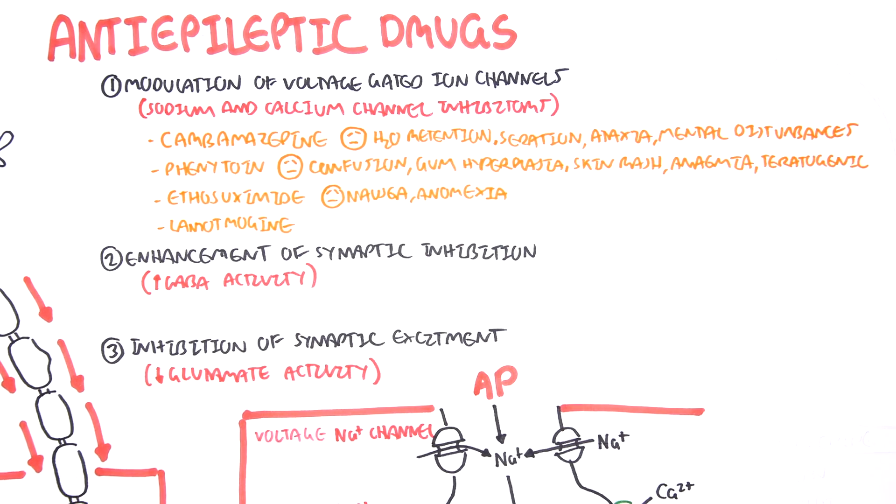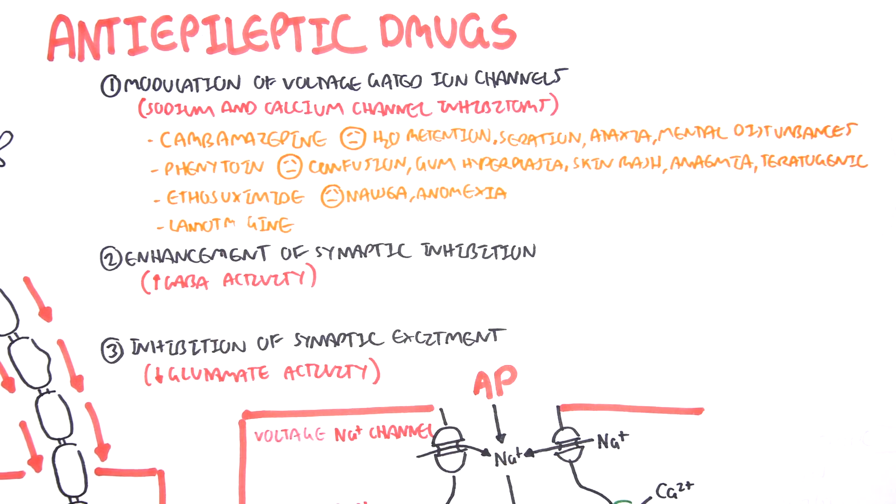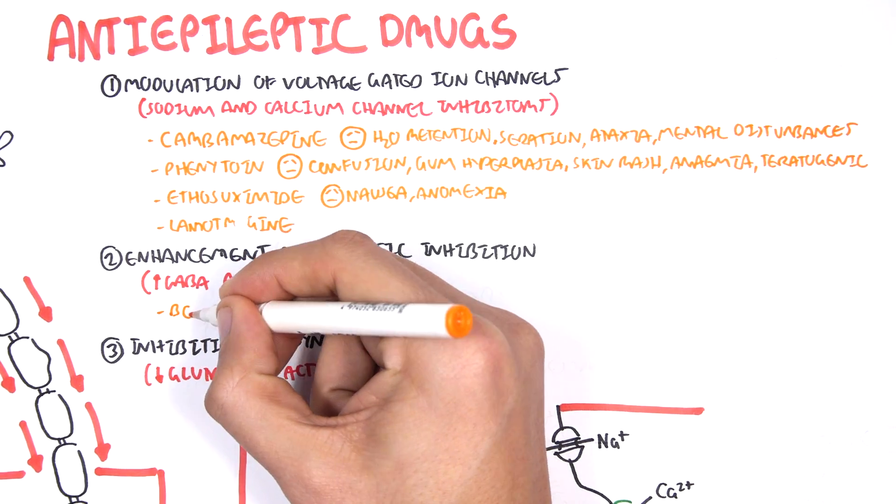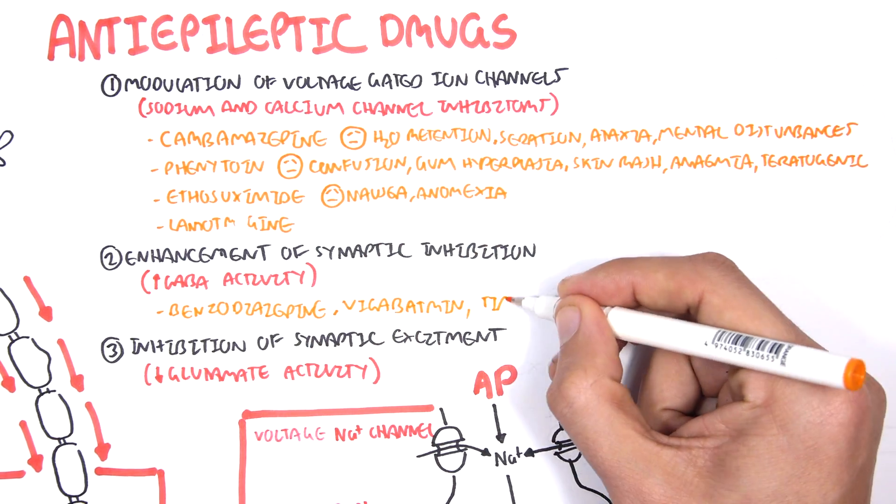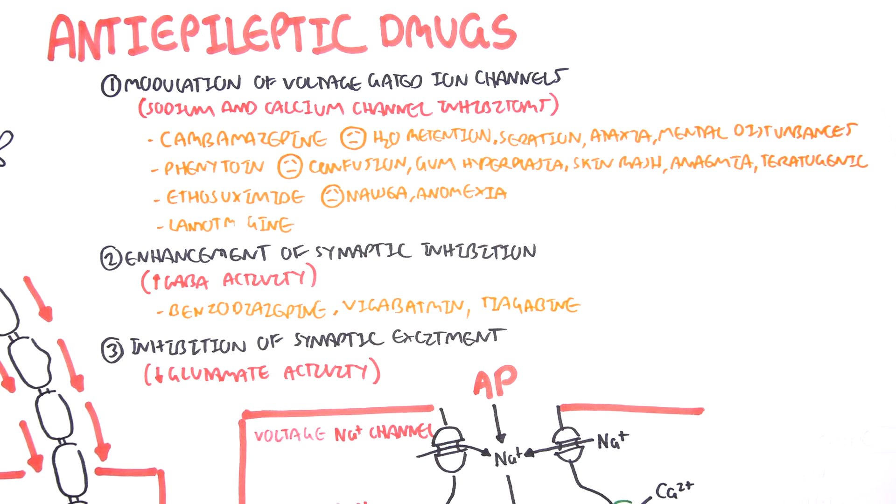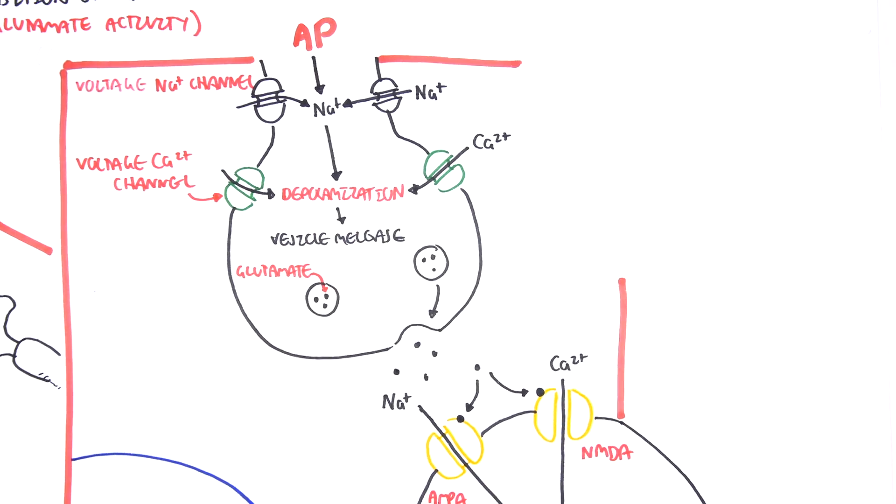The other class of anti-epileptics stimulate GABA activity. These drugs include benzodiazepines, vigabatrin, and tiagabine.